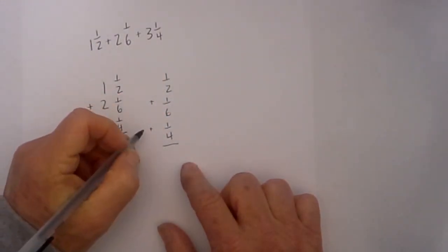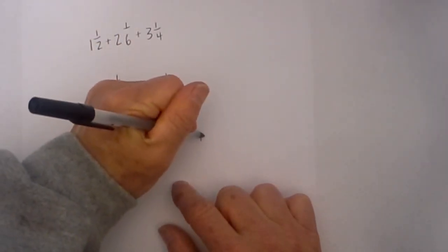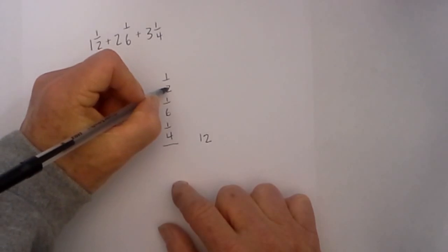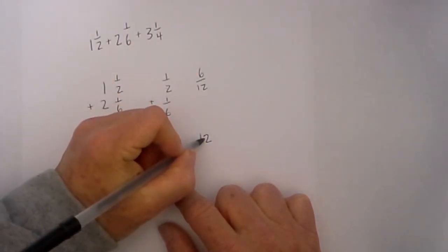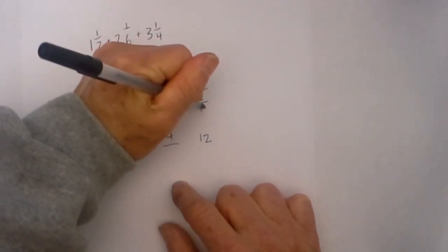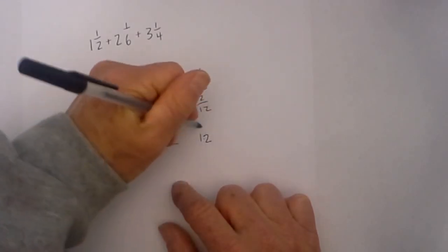I'm going to rewrite these fractions: one half plus one sixth plus one fourth. The common denominator for that will be twelve. Two goes into twelve six times and six times one is six. Six will go into twelve two times, two times one is two. And then four goes into twelve three times and three times one is three.